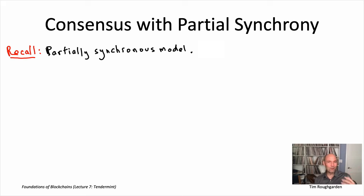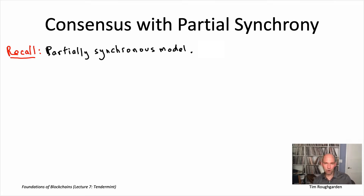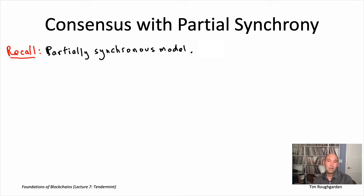We liked the synchronous model because it had strong positive results, like the Dolev-Strong protocol. We didn't like it because it made very unrealistic assumptions about guaranteed message delivery. The asynchronous model had weak assumptions, so any protocol that actually works there would be impressive, but unfortunately we threw out the baby with the bathwater — there were no good deterministic consensus protocols for Byzantine agreement in the asynchronous model.